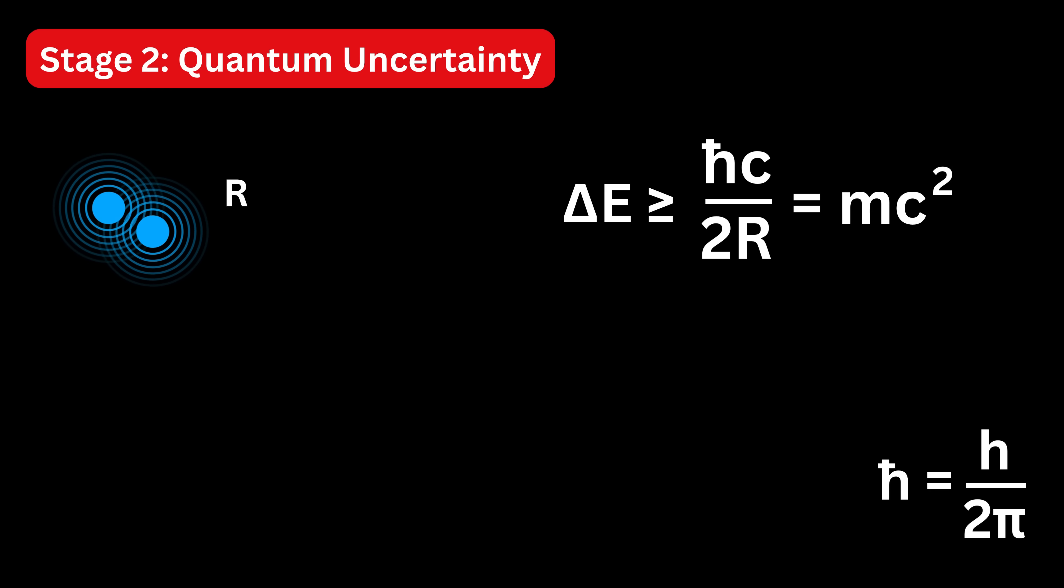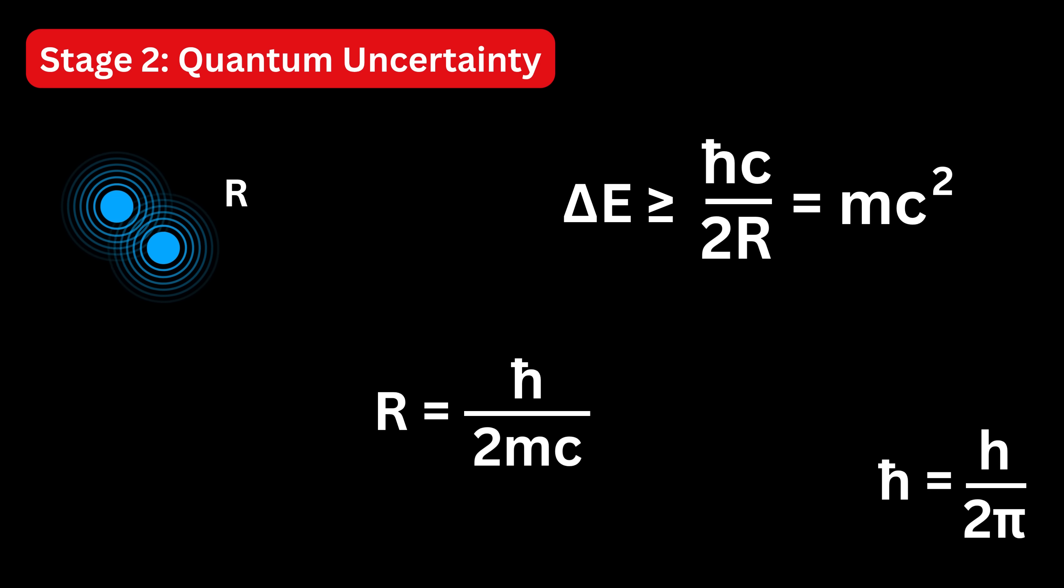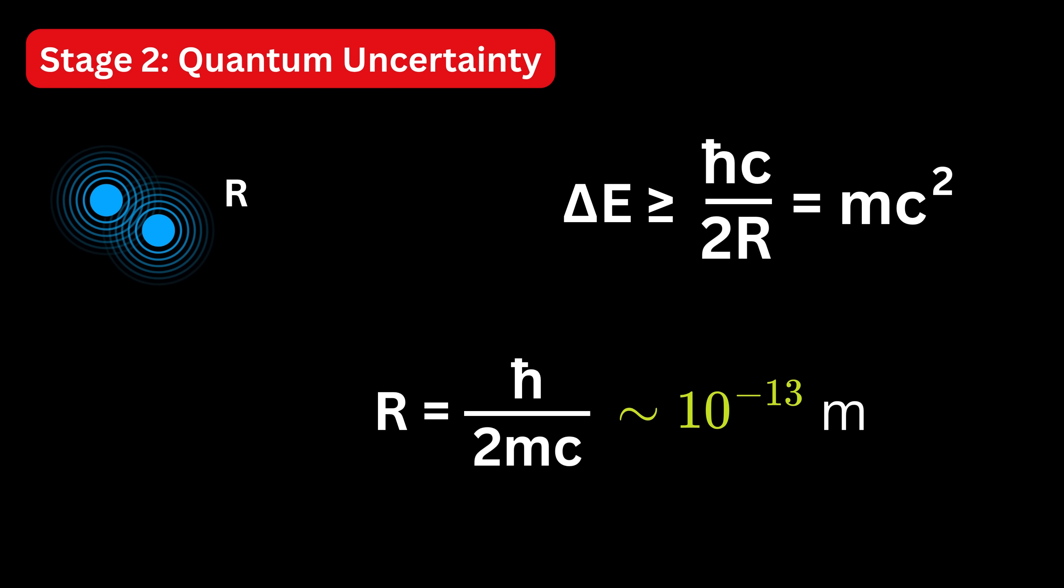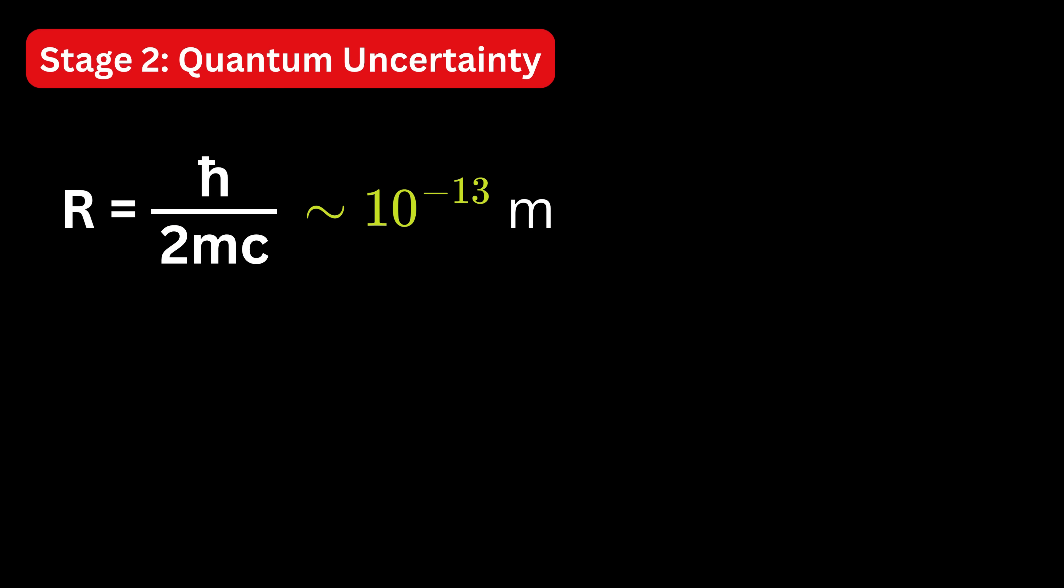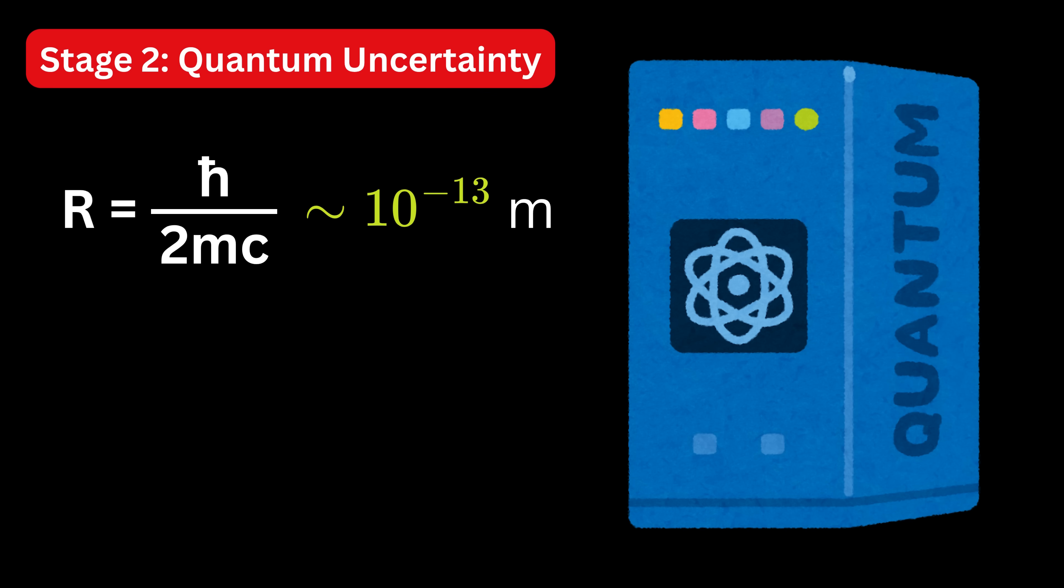If we solve for the scale where this happens, we find R becomes h-bar divided by m times c. That gives a length of about 10 raised to minus 13 meters, smaller than an atom, but still bigger than a nucleus. At this scale, the world behaves in ways that are dramatically different from our everyday experience, governed by the laws of quantum electrodynamics, QED.